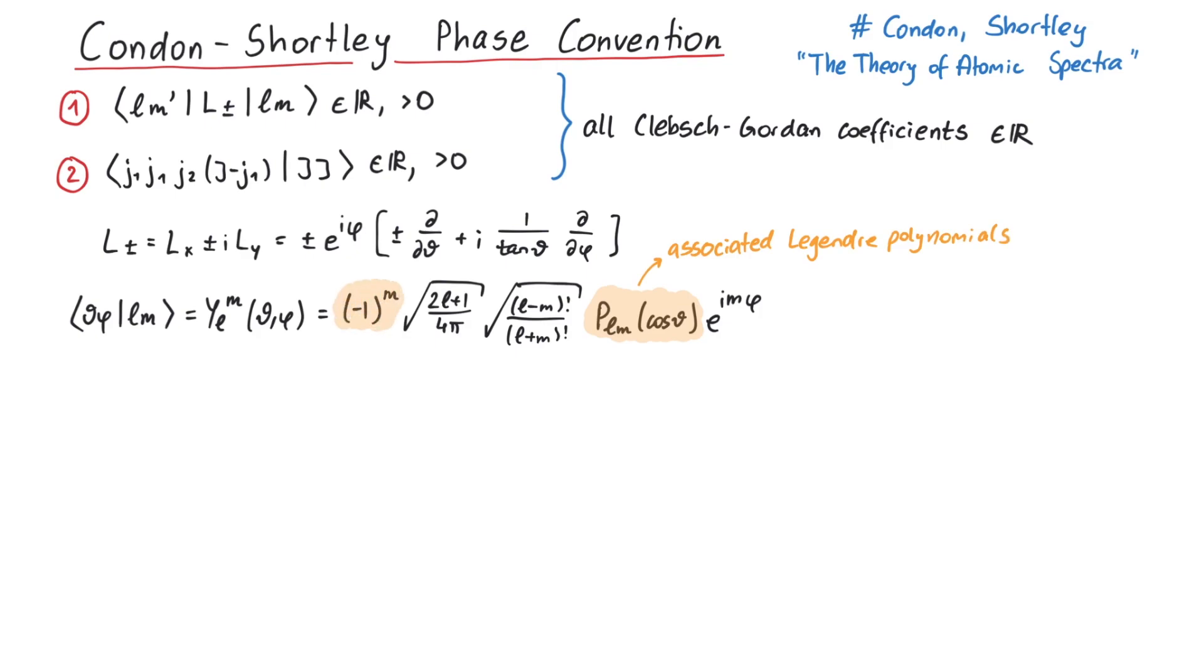Here the Plm are the associated Legendre polynomials, and this minus one to the power of m actually is a consequence of the Condon-Shortley phase convention. Sometimes it's already included in the definition of the Plm, but to make things clear, we explicitly write it here.